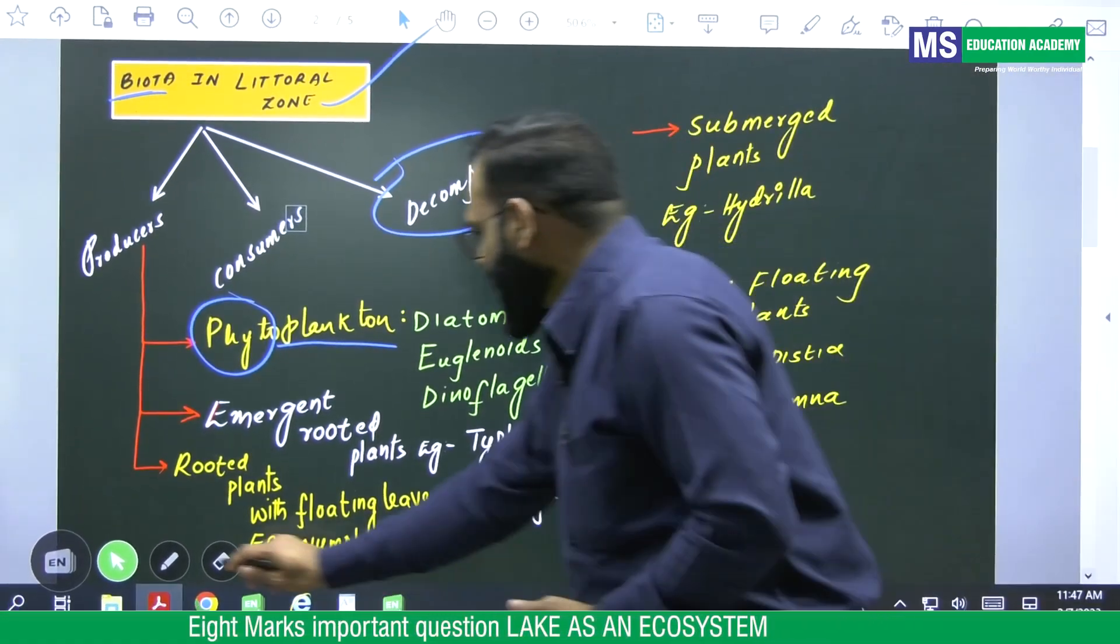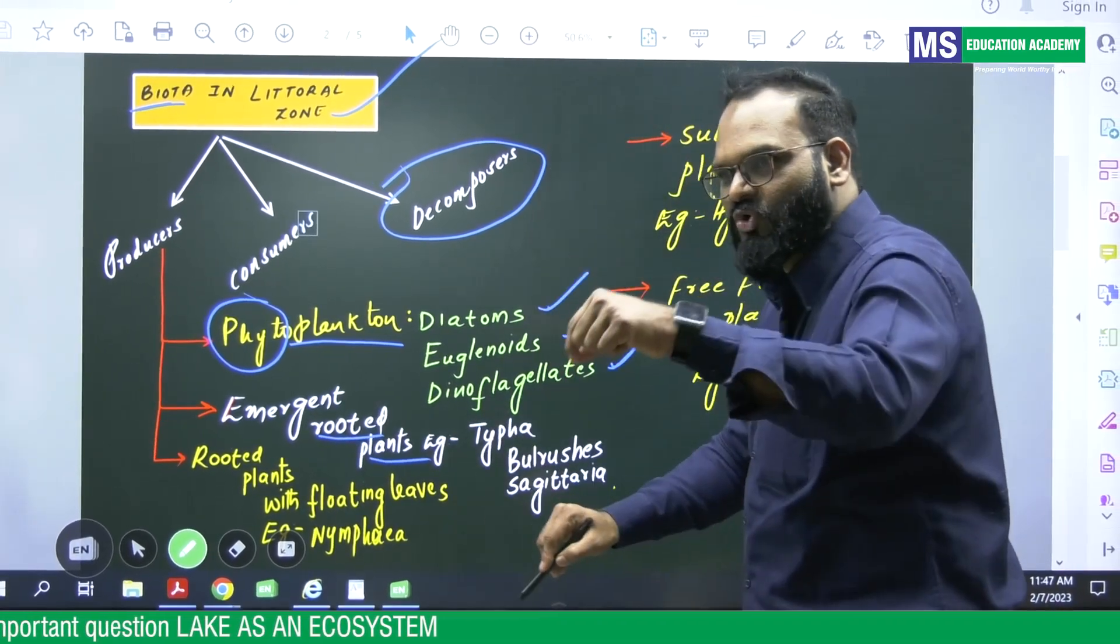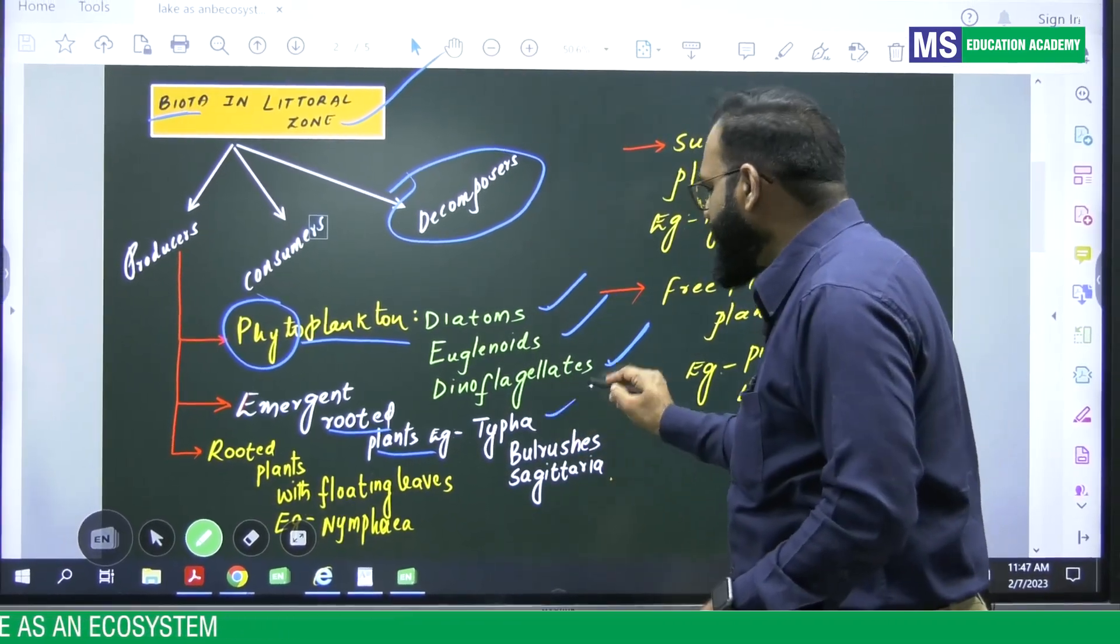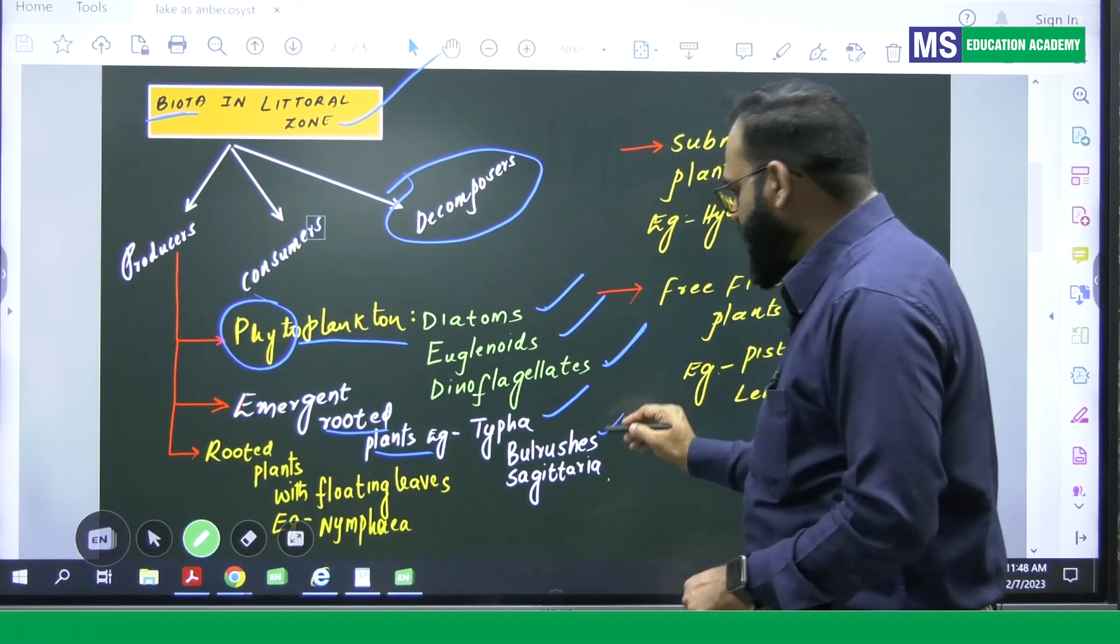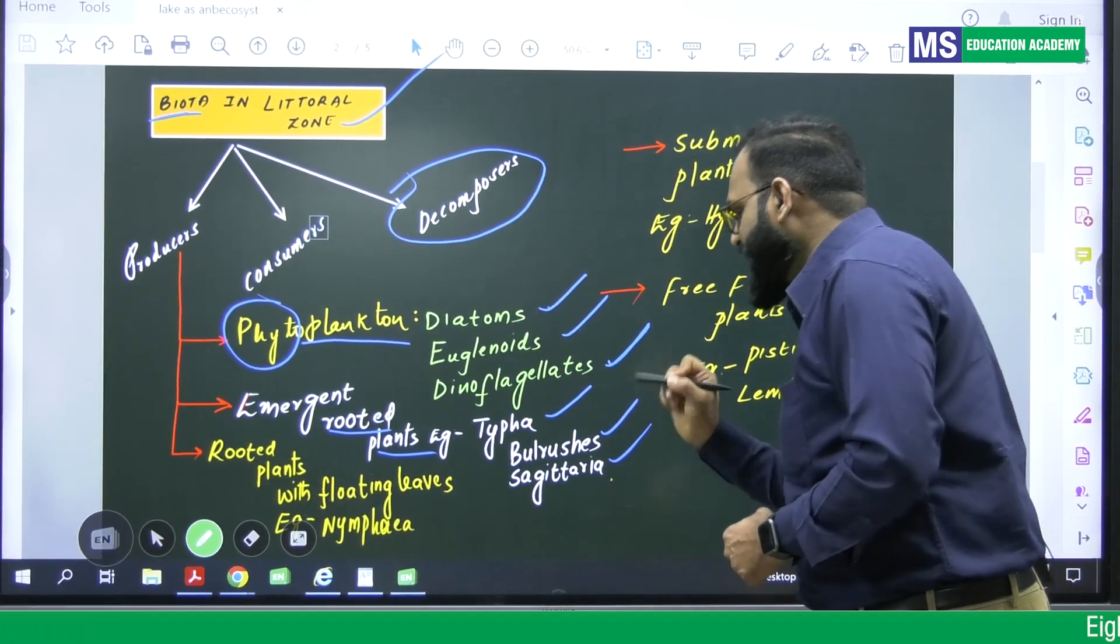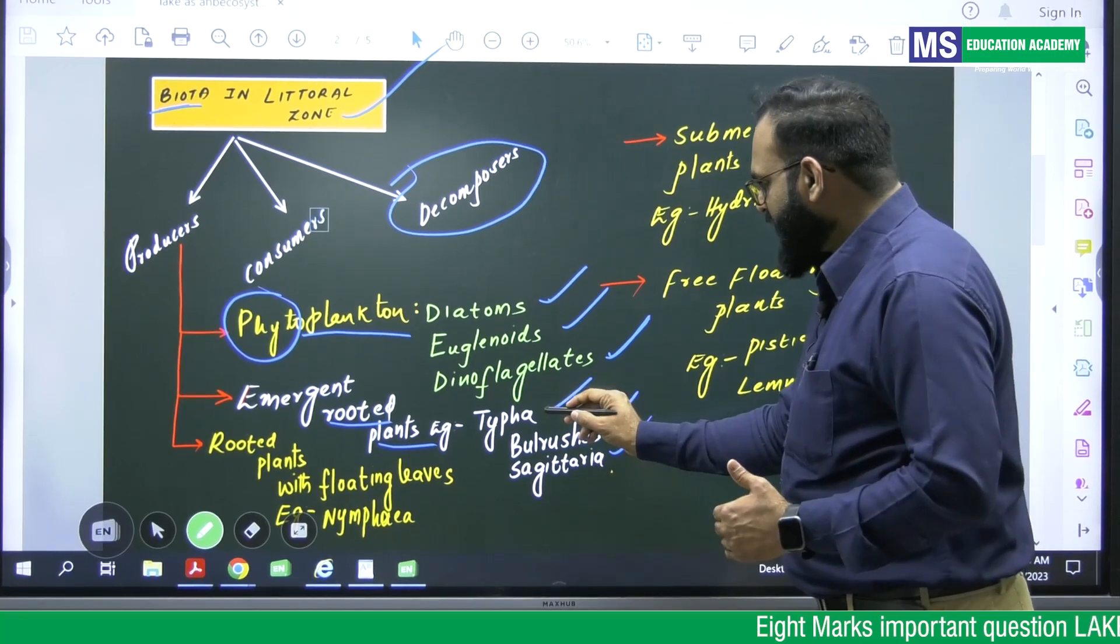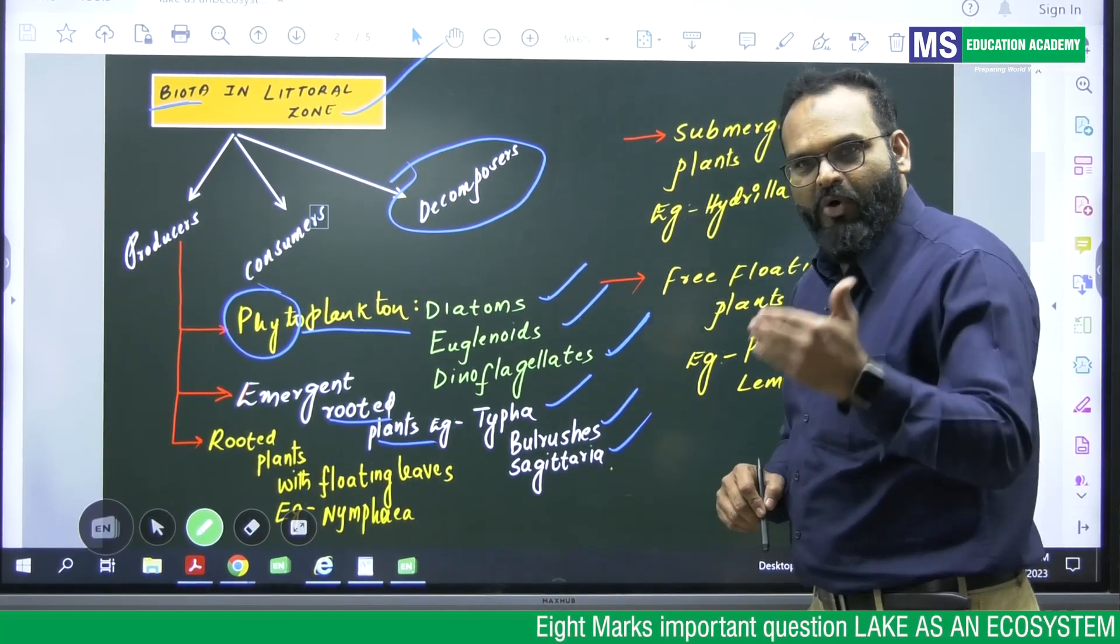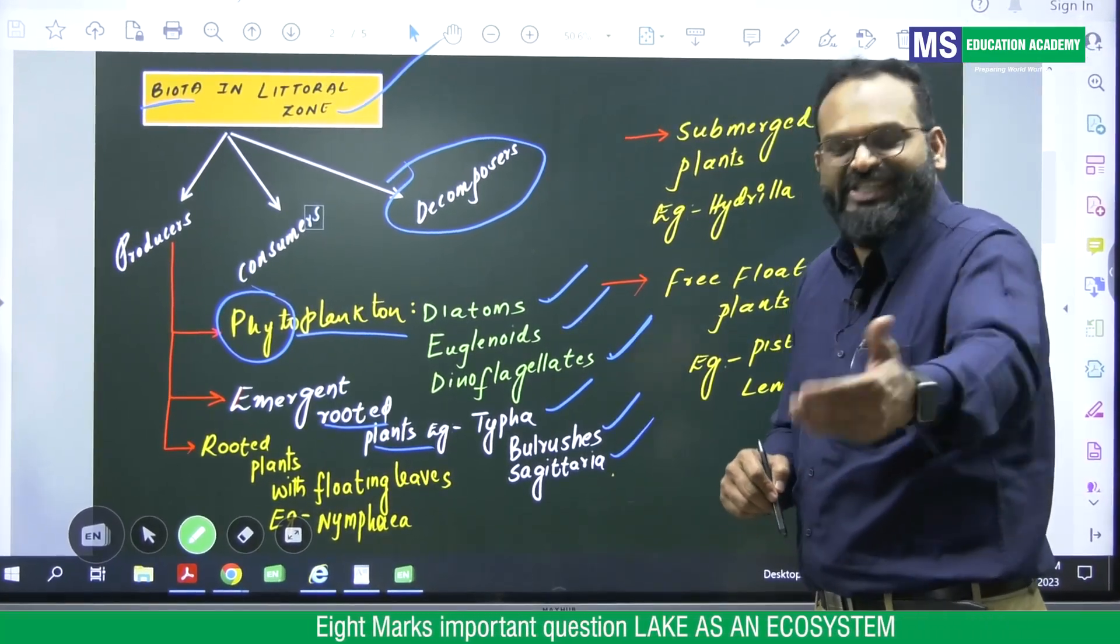Right here. So emergent plants which are having roots. Example, Typha, bulrushes, Sagittaria. I repeat one more time. Typha, bulrushes, Sagittaria.